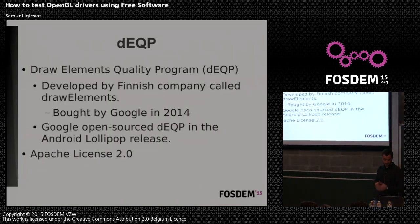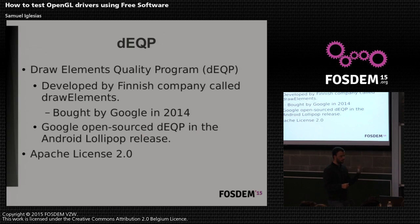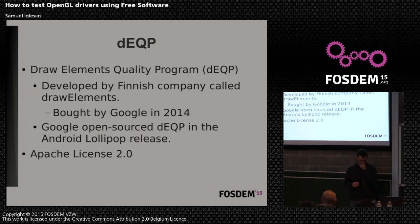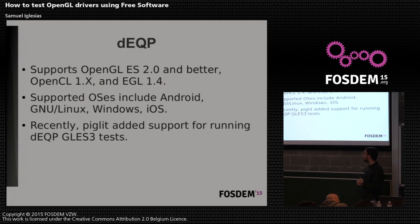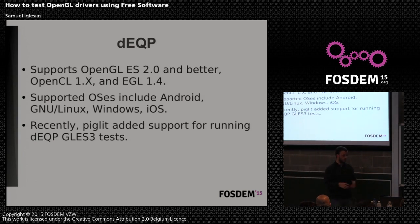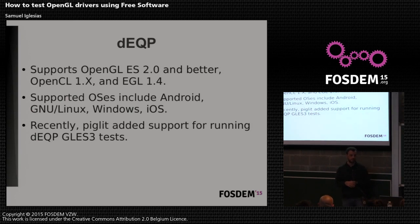The Draw Elements Quality Program was developed as a product of a Finnish company called Draw Elements. Last year this company was bought by Google, and Google open sourced it as part of Android Lollipop under the Apache License 2.0. This conformance suite supports OpenGL ES 2.0, 3.0, 3.1, OpenCL, and EGL. Supported operating systems include Android, GNU/Linux, and others. Recently — about two months ago — PigLit also added support for running the OpenGL ES 3.0 tests from the Draw Elements conformance suite.